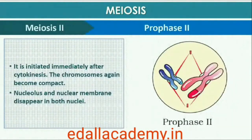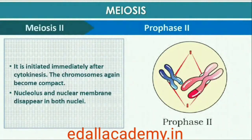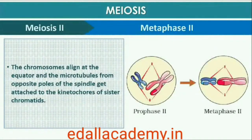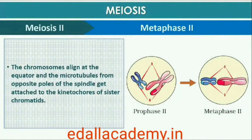Meiosis II is initiated immediately after cytokinesis, usually before the chromosomes have fully elongated. In contrast to meiosis I, meiosis II resembles a normal mitosis. The nuclear membrane disappears by the end of prophase II and the chromosomes again become compact. At Metaphase II, the chromosomes align at the equator and the microtubules from opposite poles of the spindle get attached to the kinetochores of sister chromatids.